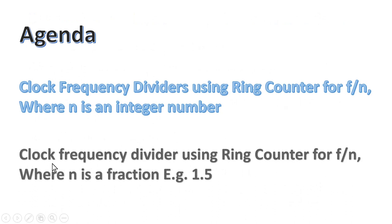The design of a clock frequency divider using a ring counter for fractional N — for example 1.5, 2.5, 3.5 — will be covered in a separate video. The link will be provided in the information bar and description section below, as this video was getting lengthy.